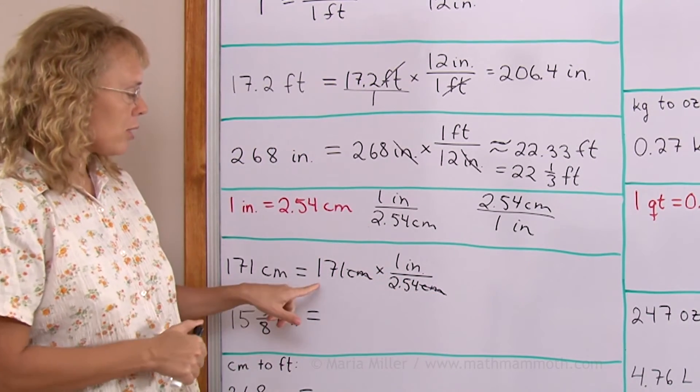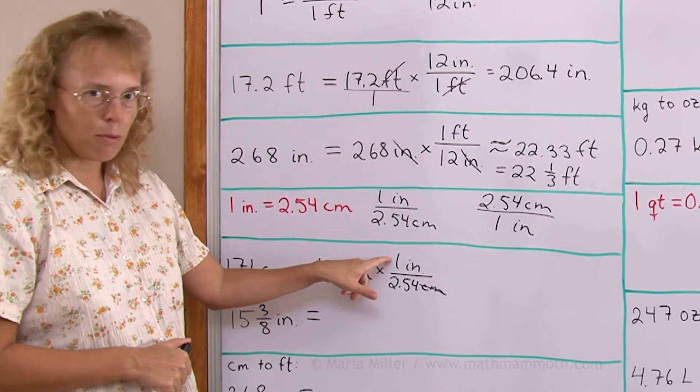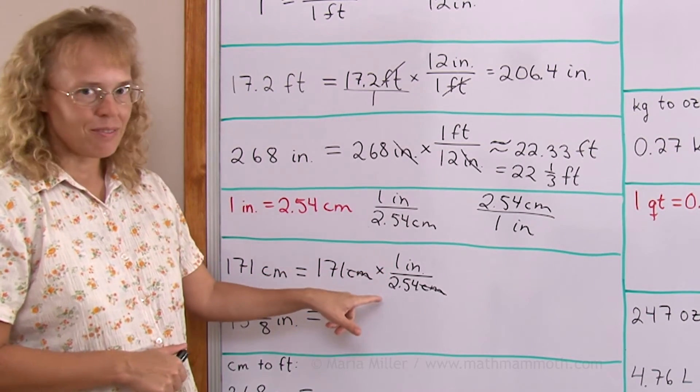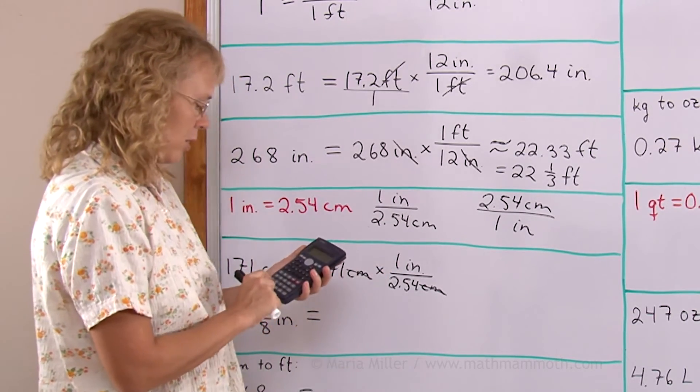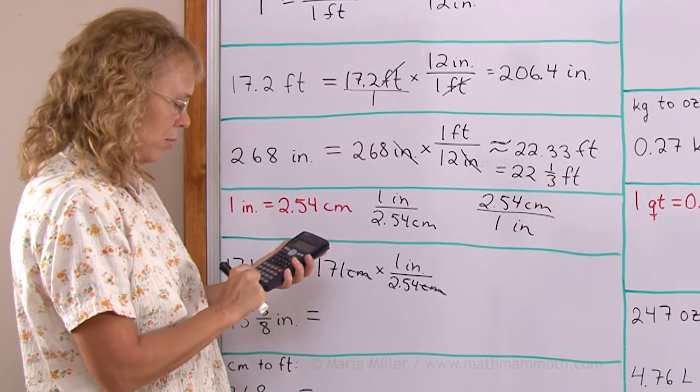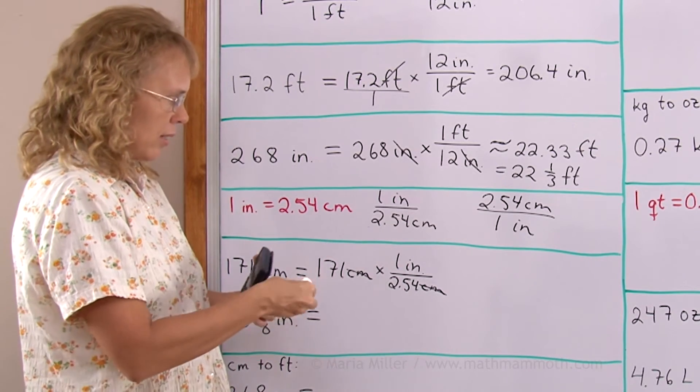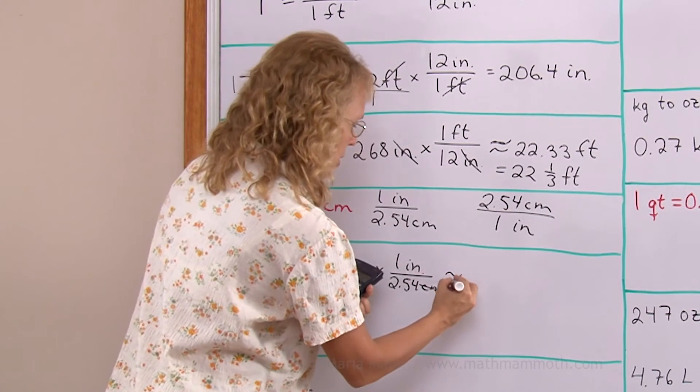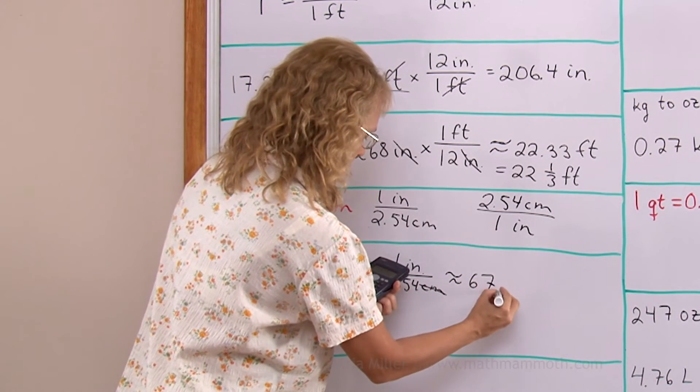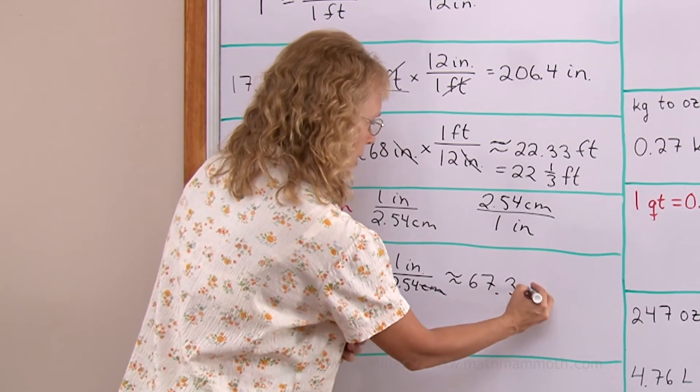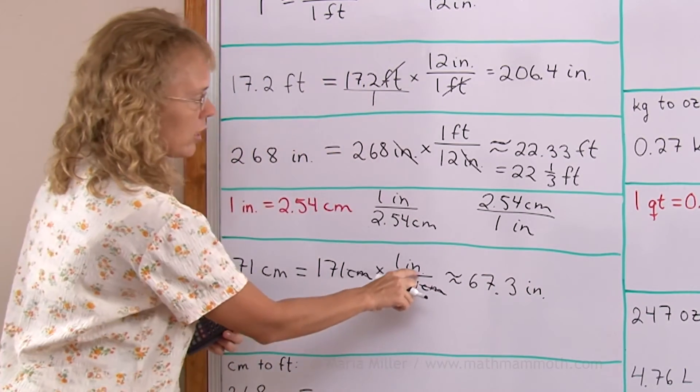Then what I will do is 171 times 1 divided by 2.54. So 171 divided by 2.54. And this is approximately 67.3 inches.